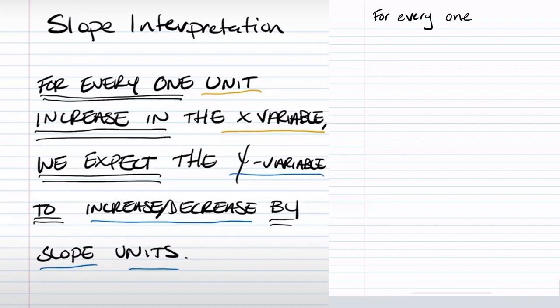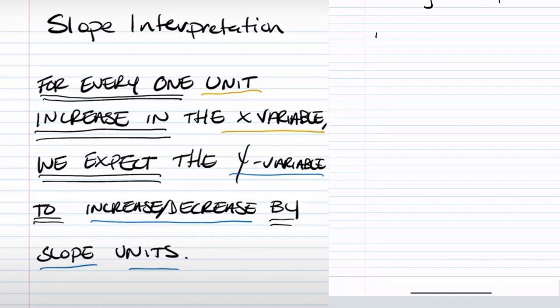So here for every one in our unit for the x variable, the explanatory variable which is speed, so for every one mile per hour increase in speed, we expect, and then we'll state the y variable or the response variable, which here was distance to stop, so stopping distance to.